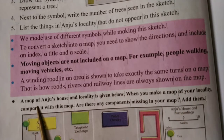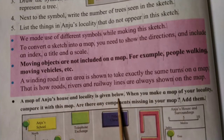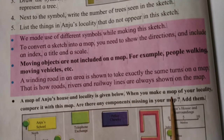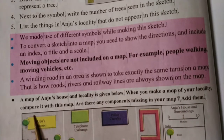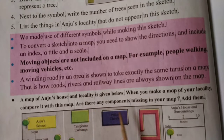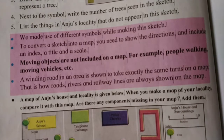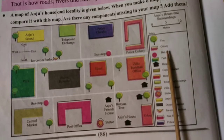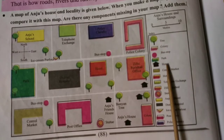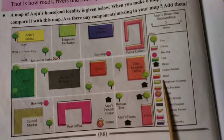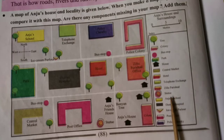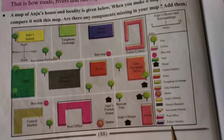A map of Anju's house and locality is given below. When you make a map of your locality, compare it with this map. Are there any components missing in your map? Add them. The index includes: Tree, Colony, Bus Stop, Park, House, Central Market, Hotel, Telephone Exchange, Jilla Parishad, Statue, Anju School, District Hospital, Ice Cream Parlor, Post Office, Police Chowki.